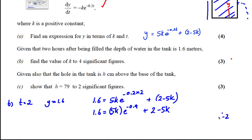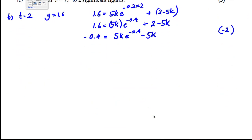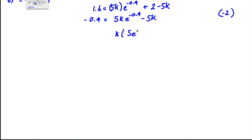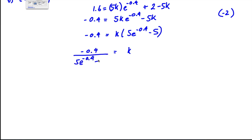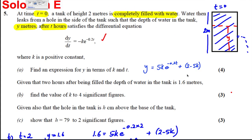We now solve for k. Subtracting 2 from both sides: -0.4 = 5k·e^(-0.4) - 5k. Factorising out k: -0.4 = k(5e^(-0.4) - 5). Dividing both sides: k = -0.4 / (5e^(-0.4) - 5). Evaluating this gives k = 0.2427 to four significant figures.